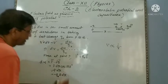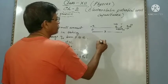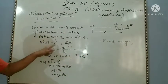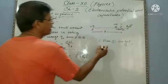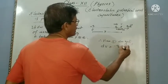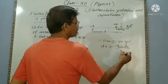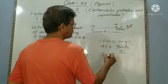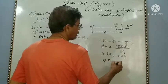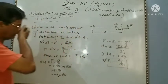Since F equals Q naught times E, we have dW equal to minus Q naught E dr. Substituting into equation 1, dV equals dW by Q naught, the Q naught cancels, giving dV equal to minus E dr. Therefore, E equal to minus dV by dr. This is the fundamental relation.